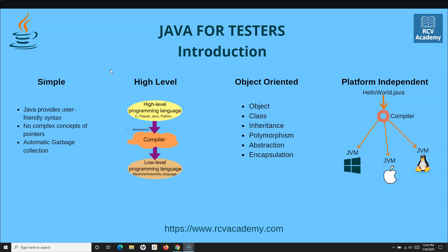The next very important thing to remember about Java is that it is platform-independent. What this means is that you write your program once and you can run it on any platform. For example, you have written a program 'HelloWorld.java'. There is a Java compiler which compiles this code, and then the JVM — which has the Java interpreter — interprets it. The compiler compiles your .java file and converts it into a .class file.